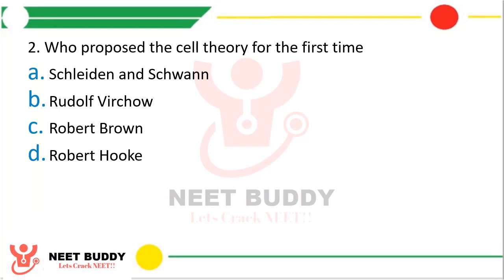Question two. Who proposed the cell theory for the first time? Option A Schleiden and Schwann, option B Rudolf Virchow, option C Robert Brown, or option D Robert Hooke. The correct answer is option A — Schleiden and Schwann proposed the cell theory for the first time. However, their theory was not complete, so it was modified later on.